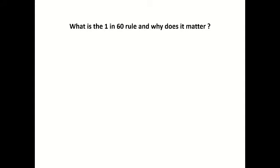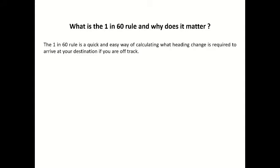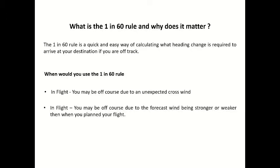So the first thing I want to talk about is: what is the 1 in 60 rule and why does it matter? The 1 in 60 rule is just a quick and easy way of calculating out what heading changes are required to arrive at your destination if you're off track. When would you use the 1 in 60 rule? Theoretically, you'd use it in flight — you may be off course due to an unexpected crosswind, or due to the forecast wind being stronger or weaker than when you planned your flight.